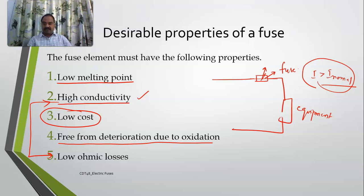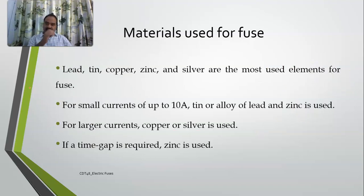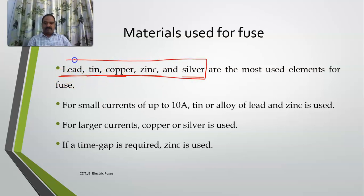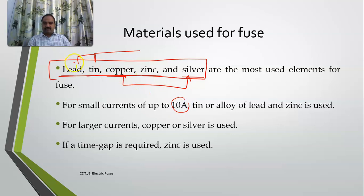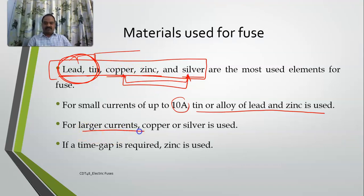The materials used for fuses — looking at the periodic table, the d-block elements are commonly used. Materials like lead, tin, copper, zinc, and silver are the most used fuse elements. Copper and silver are considered the best conducting materials and have suitable melting points. For currents less than 10 amperes, an alloy of lead and tin is used. For larger currents, copper and silver are preferred because they provide low ohmic losses.